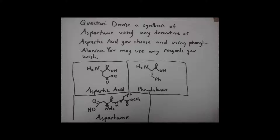Hello everybody, this is Beau Dinian and I come to you with my first question, which was submitted by a professor of Temple University. This question tells us to devise a synthesis of aspartame using any derivative of aspartic acid we choose and using phenylalanine. We must make the phenylalanine derivatives ourselves using any reagents we wish. I have given the structures of aspartic acid, phenylalanine, and aspartame to make it clear exactly what they are asking us to do.